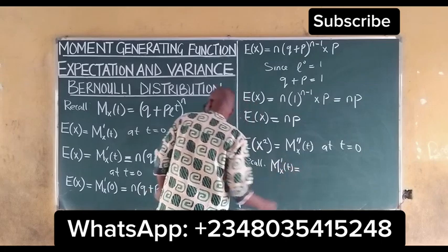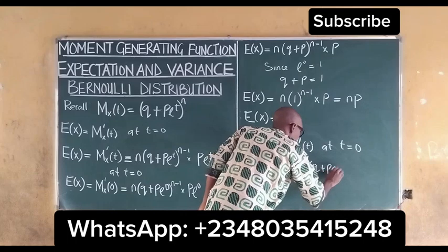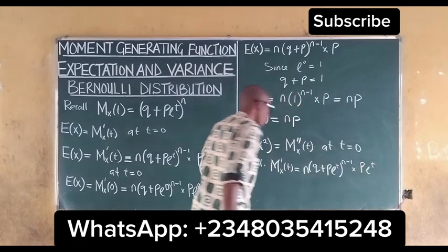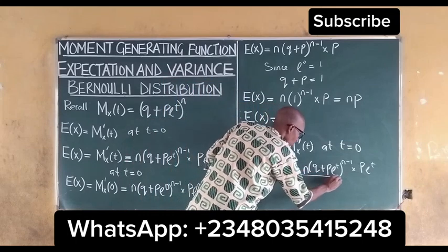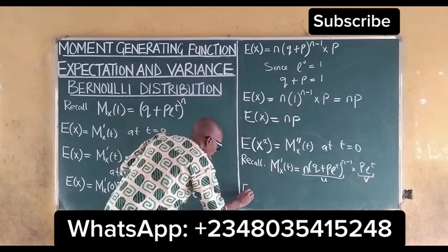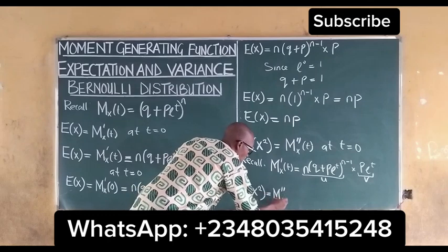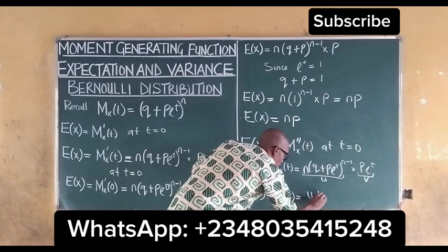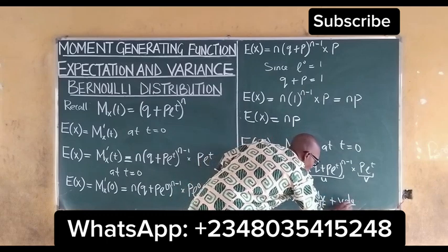The first derivative of the moment generating function gives n into q plus p e^t raised to the power of n minus one, multiplied by p e^t. We use the product rule of differentiation to differentiate this, taking one part as u and the other as v. So our expected value of x squared, which is the second derivative, equals u dv/dt plus v du/dt.